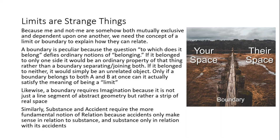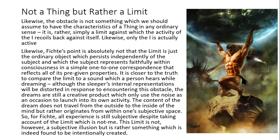Because me and not-me are somehow both mutually exclusive and dependent upon one another, we need the concept of a limit or boundary to explain how they can still relate. A boundary is a peculiar thing because the question 'to which does it belong?' defies ordinary notions of belonging. If the limit belonged to only one side, it would be just another ordinary property of that thing rather than a boundary separating and joining both. On the other hand, if it belonged to neither, it would simply be another unrelated object on its own. Only if a boundary belongs to both A and B at once can it actually satisfy the meaning of being a limit. Likewise, a boundary requires imagination because it is not just a line segment of abstract geometry but rather a real strip of space. Similarly, accident and substance both require the more fundamental notion of relation because accidents only make sense in relation to substance and substance only in relation to accident. The obstacle is not something which we should assume to have the characteristics of a thing in any ordinary sense — it is rather simply a limit against which the activity of the I recoils back against itself.